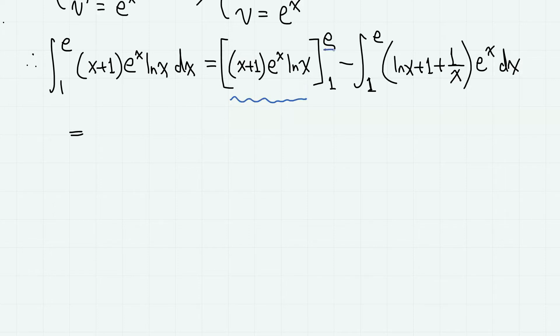Now let's calculate this part. When x equals e, it gives (e+1) times e^e, and when x equals 1, the expression is simply 0. So we have this.